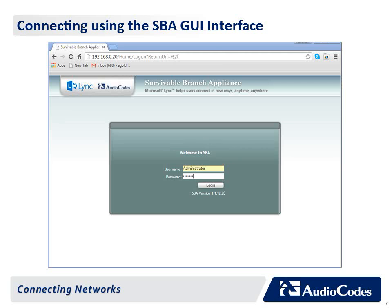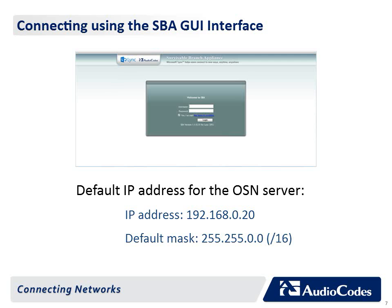The SBA web-based graphical user interface GUI tool is used for installing and configuring the SBA application running on the Mediant 1000B SBA OSN server. You can connect and log in to the SBA management interface using the default LAN IP address of the OSN server. The default IP address of the OSN server is 192.168.0.20 with subnet mask /16. You can initially connect to the SBA management interface using this address and can then change this default IP address to suit your network environment.